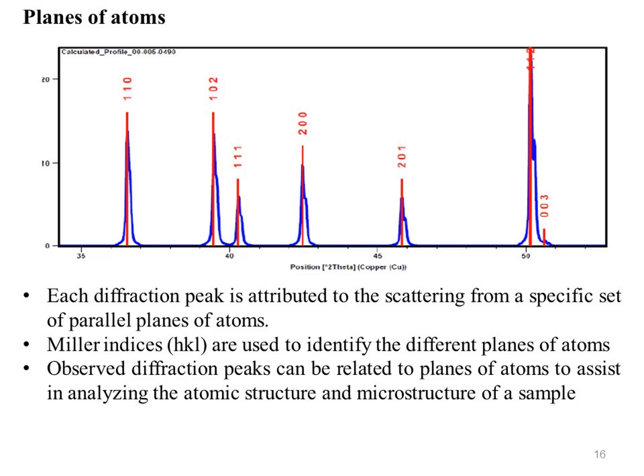Diffraction pattern calculations treat a crystal as a collection of planes of atoms. Each diffraction peak is attributed to the scattering from a specific set of parallel planes of atoms. Miller indices (HKL) are used to identify the different planes of atoms. Observed diffraction peaks can be related to planes of atoms to assist in analyzing the atomic structure and microstructure of a sample.